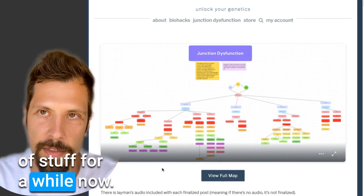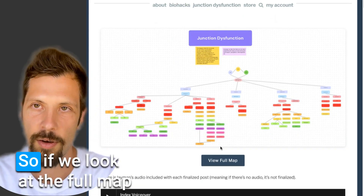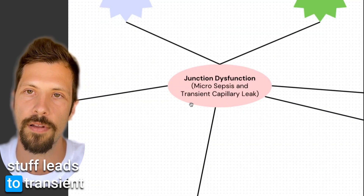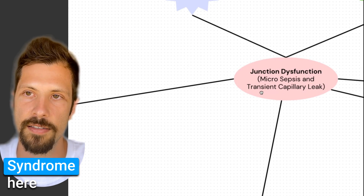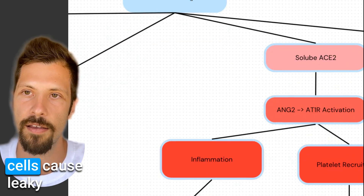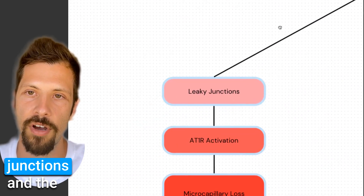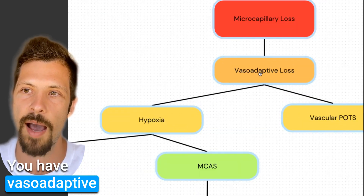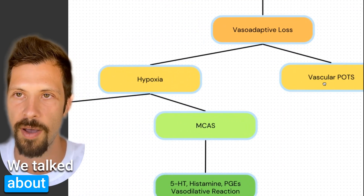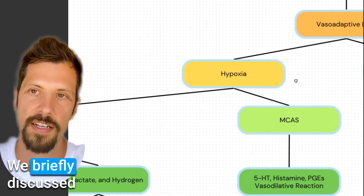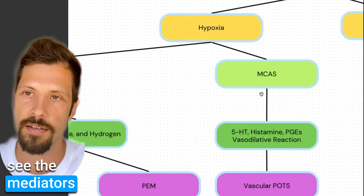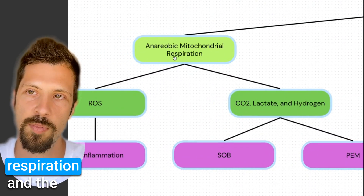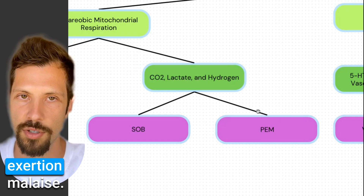I've been talking about this as junction dysfunction for a while now. Looking at the full map, you can see how all of this leads to transient capillary leak syndrome. Endothelial cells cause leaky junctions and microcapillary loss. With that loss, you get vasoadaptive loss and vascular POTS. We also briefly discussed hypoxia — you can see the mediators that are released — and we discussed how mitochondrial respiration issues cause post-exertional malaise.